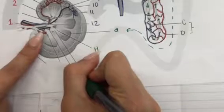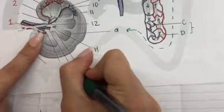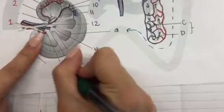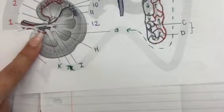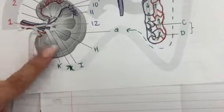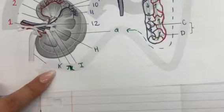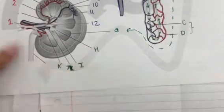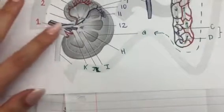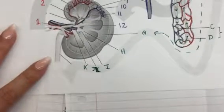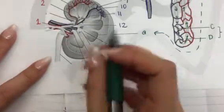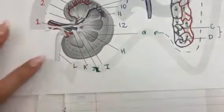Oops, I missed the letter. The major calyces was supposed to be the letter J. The renal pelvis was the letter K. And then the renal pelvis empties the urine into the ureter.